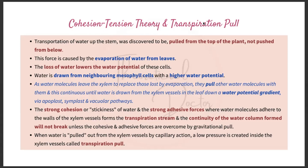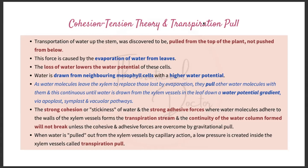In the cohesion tension theory and transpiration pull, the transportation of water up the stem was discovered to be pulled from the top of the plant — not pushed from below as in root pressure theory. This pulling force is caused by the evaporation of water from the leaves, and the loss of water lowers the water potential of the cell. Water moves from an area of high water potential to an area of low water potential, and that does not require energy.